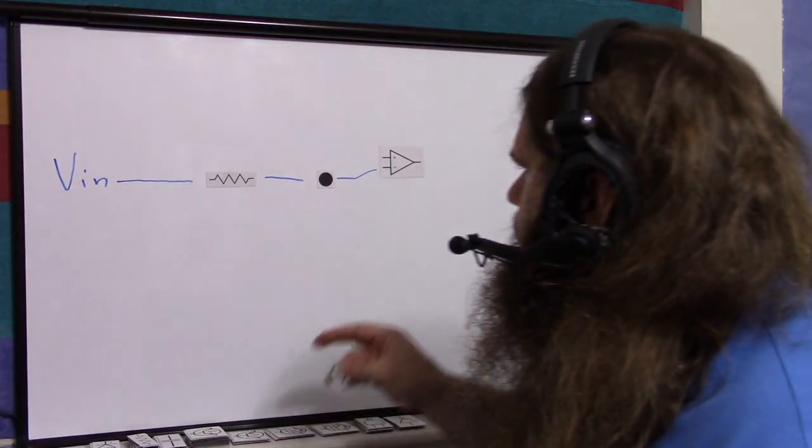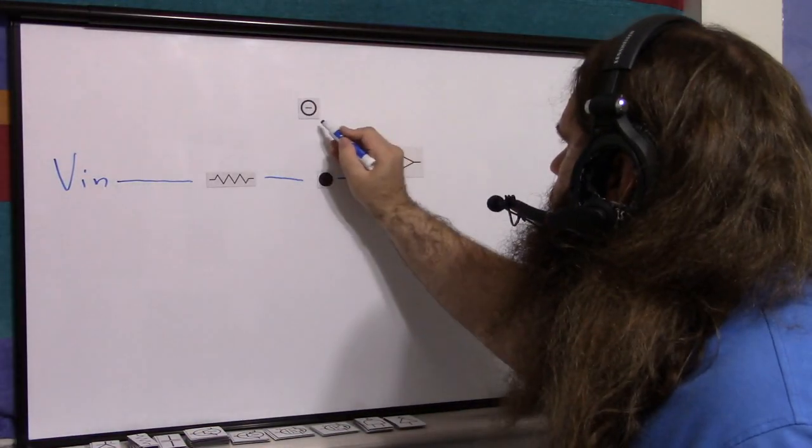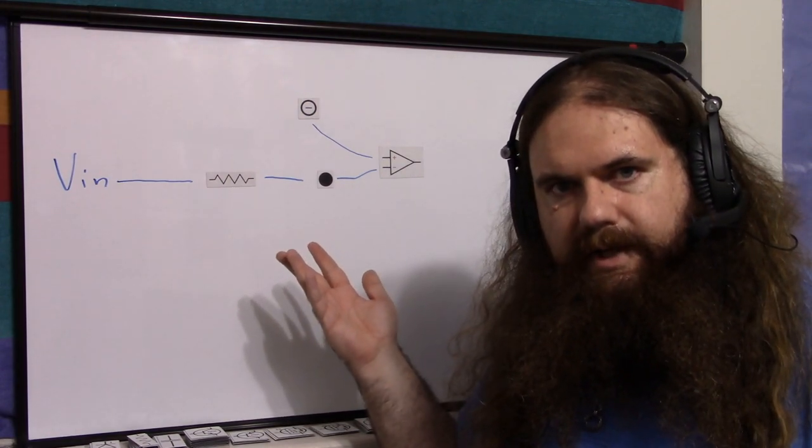The non-inverting, we're going to connect to circuit ground, the zero. You can see already why this ends up being inverting.